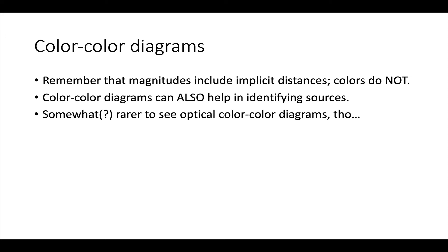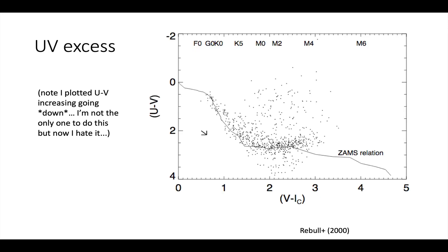I think it's somewhat rarer to see optical color-color diagrams. So here, I'm going to give you a couple. This is a color-color plot looking for ultraviolet excess. The y-axis is U minus V. The x-axis is V minus I.